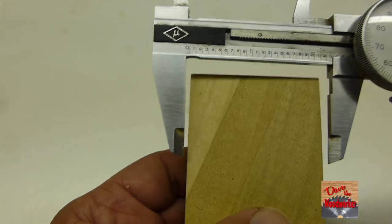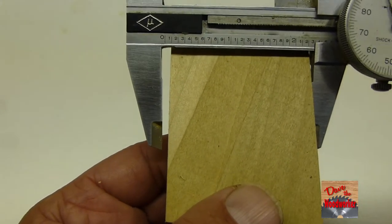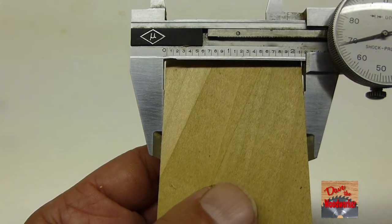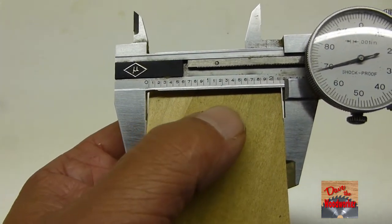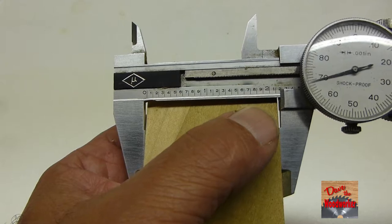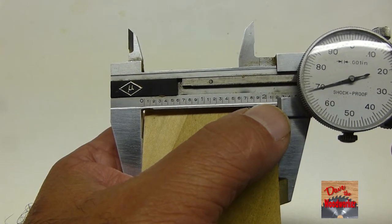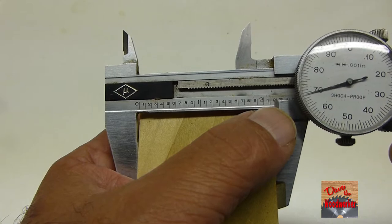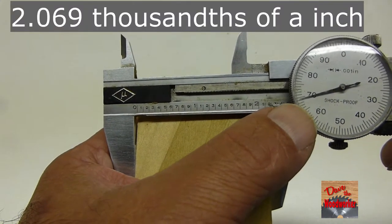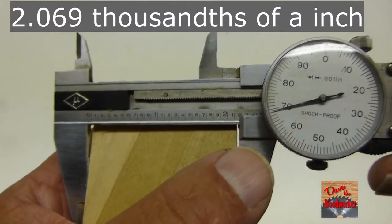Okay, we're going to measure the width of this piece here. We're going to hold it together and you count it over. And you see it's two inches, a big two here, then it's one hundred and looks like sixty-nine thousandths.